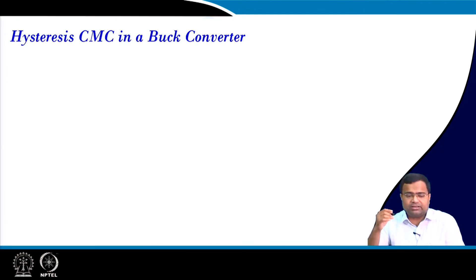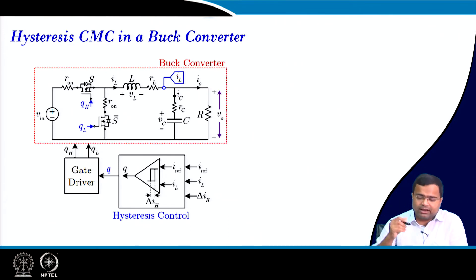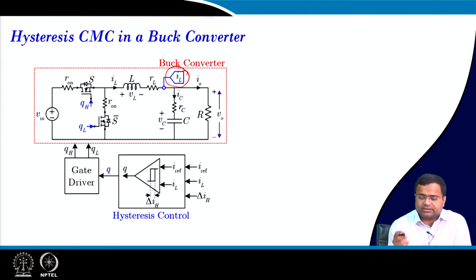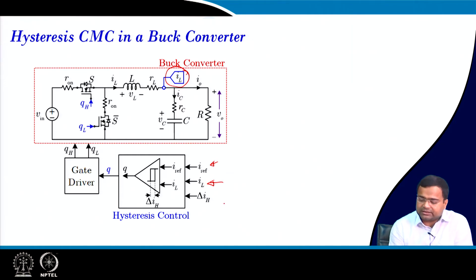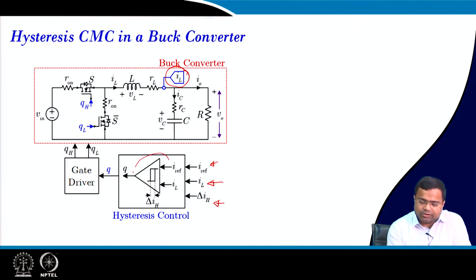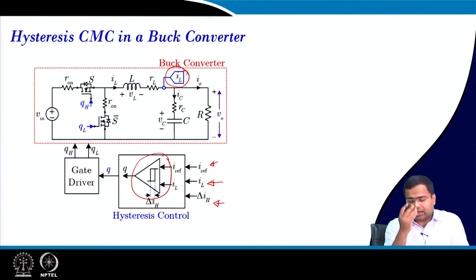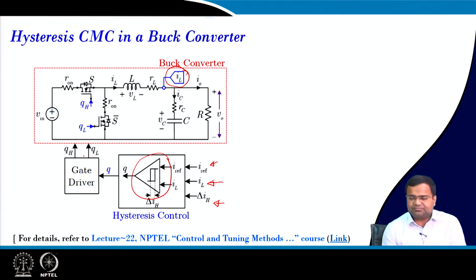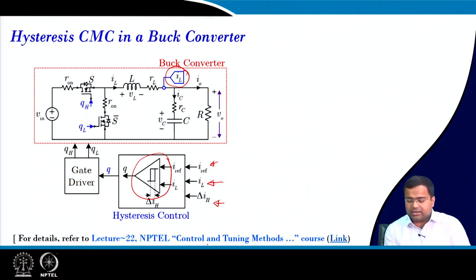Let us start with current hysteresis control in a buck converter, where this is the sensed inductor current. You can put a current sense resistor or any other way. The sensed current is here, then we have a reference current that has to be tracked, and this is the hysteresis band. This can be realized using a pure hysteresis comparator, and this is the control logic that will generate the gate signal. For more detail about this hysteresis control, you can refer to our earlier NPTEL course, lecture number 22.